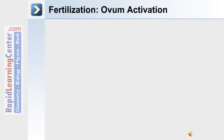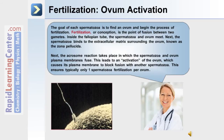Fertilization leads to ovum activation. The goal of each spermatozoa is to find an ovum and begin the process of fertilization. Fertilization, or conception, is the point of fusion between two gametes. Inside the fallopian tube, the spermatozoa and ovum meet. Next, the spermatozoa binds to the extracellular matrix surrounding the ovum, known as the zona pellucida.